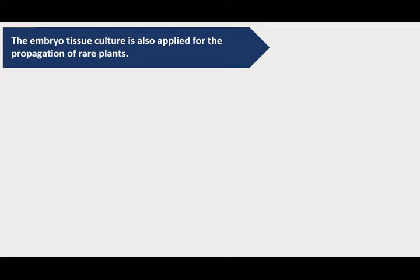Embryo tissue culture is also applied for propagation of rare plants. In some coconuts, a soft, solid fatty tissue develops in place of liquid endosperm. This was first noted by Mohan Ram in the year 1976. This region where the liquid endosperm should be present instead contains soft, solid, and fatty tissues. These coconuts are called Makapuno coconuts. They are very expensive and rare, served only at special banquets in the Philippines. Under normal conditions these seeds fail to germinate, but using embryo culture, we can produce large numbers of Makapuno coconuts through tissue culture.